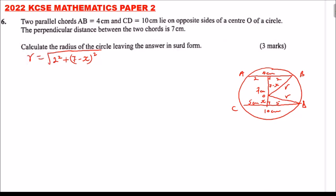From there, using this other triangle, r equals the square root of 5 squared plus x squared, also using the Pythagoras theorem. Because we are referring to the same radius, we can equate these two expressions: square root of (2 squared plus (7 minus x) squared) equals square root of (5 squared plus x squared).